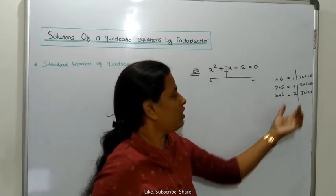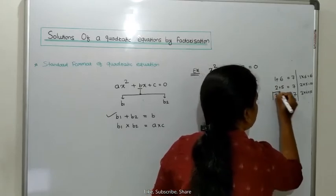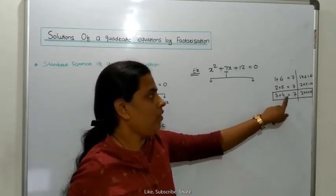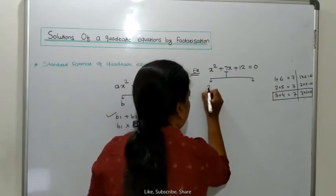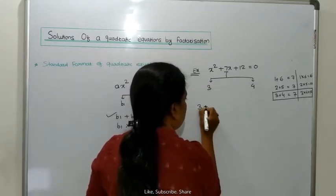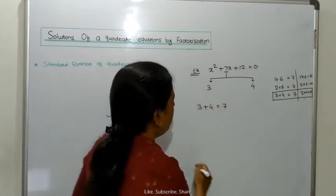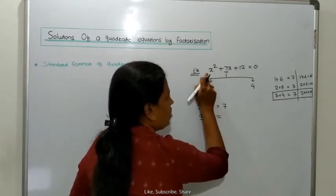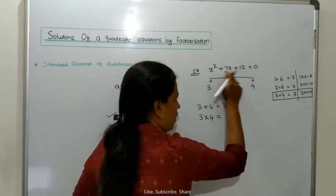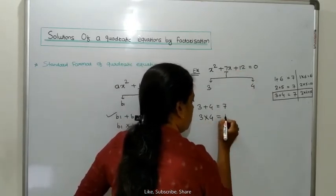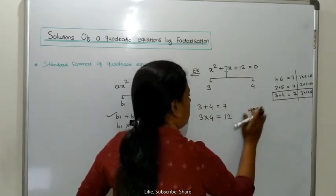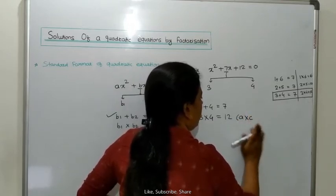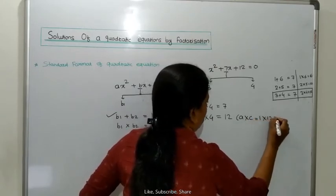Which numbers do we use here? When we add 3 and 4 we get 7, and when we multiply 3 and 4 we get 12. The value of A is 1, and C is 12, so A into C is 1 into 12 which equals 12. So 3 into 4 equals 12, which is A into C. Therefore, the answer is 12, and these two numbers satisfy both conditions.